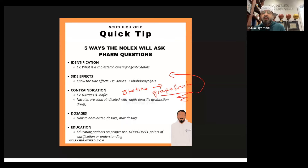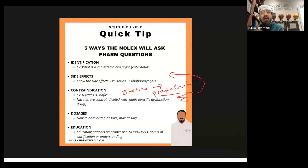Just like you see here in the quick tip, another great example is nitrates, which are potent vasodilators, and the -nafils — vardenafil, tadalafil, and sildenafil — your erectile dysfunction drugs. Those are contraindicated because you have two potent vasodilators; we're not going to give them together. So with statins and grapefruit, I add that to education along with side effects — now I'm building a select-all-that-apply. Could it be a freebie? Absolutely. But I'm building select-all-that-apply with muscle aches, rhabdomyolysis as a side effect, and grapefruit contraindication education.